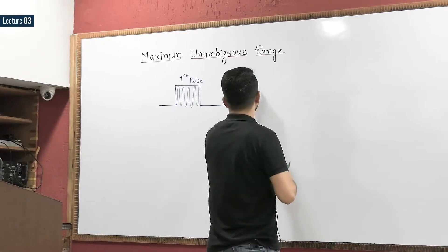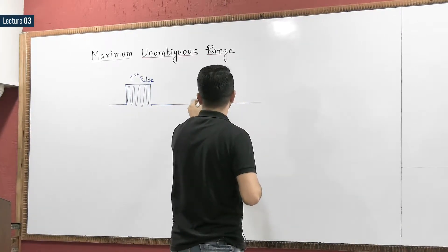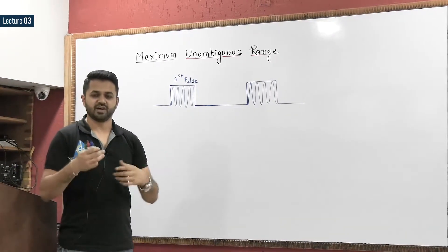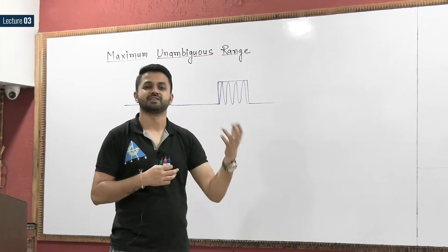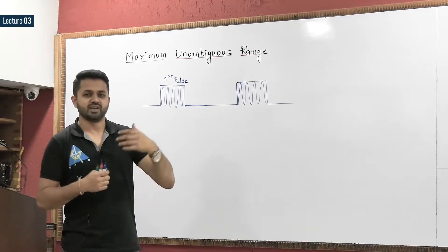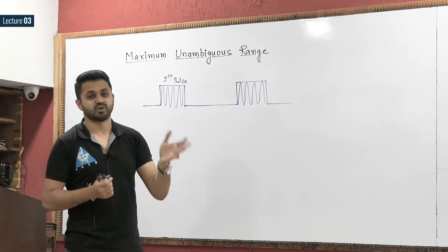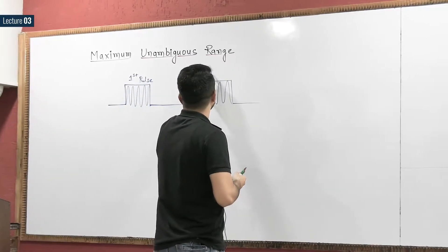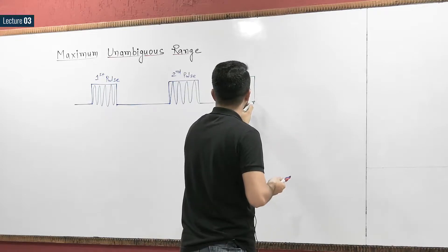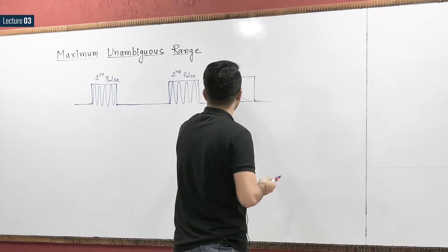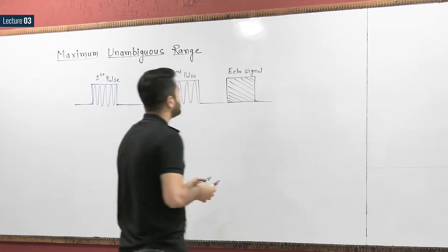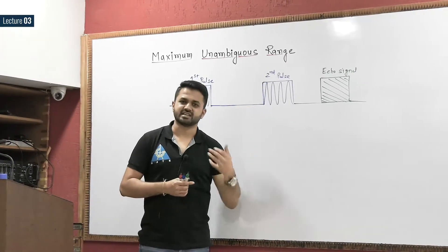So we will transmit a second pulse, because we have to transmit the signal continuously. It may be possible the target was not in range before, but as we move forward and transmit again, the target may come in range or may itself be moving. When we transmit the second pulse, we may get an echo signal — and this echo signal arrives just after transmitting the second pulse.